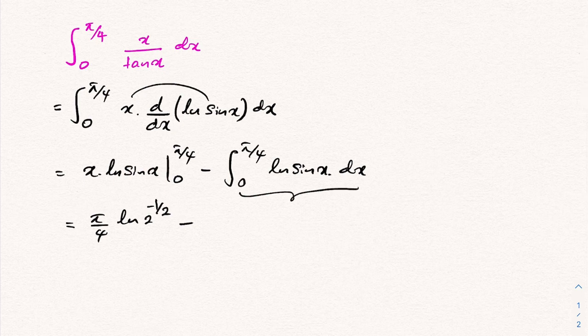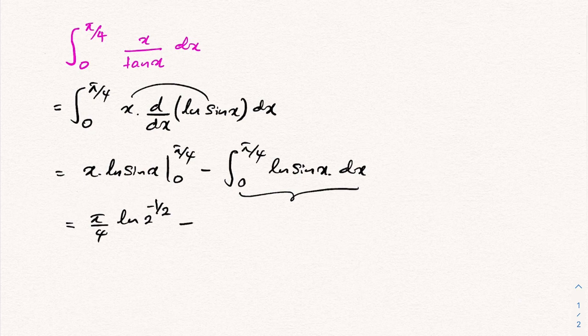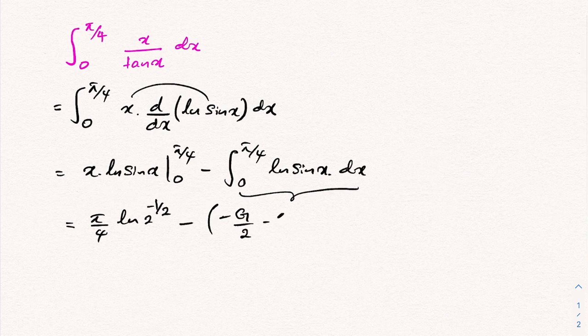this integral. We solved this integral in a previous video. I will add the link in the description and also make a card. The answer is minus g over 2, where g is Catalan's constant, minus pi over 4 natural log of 2.